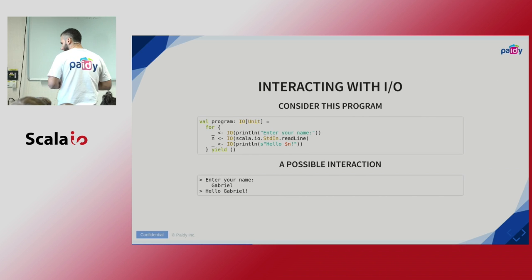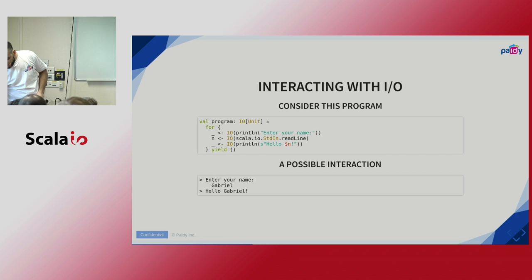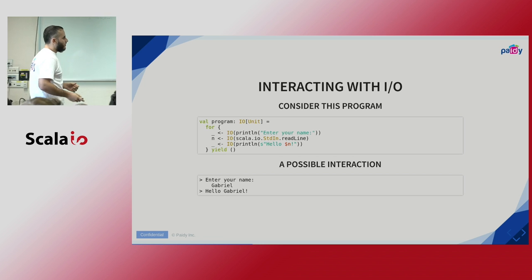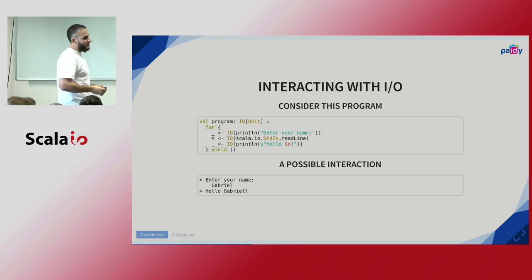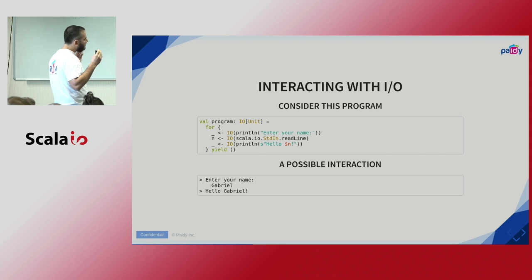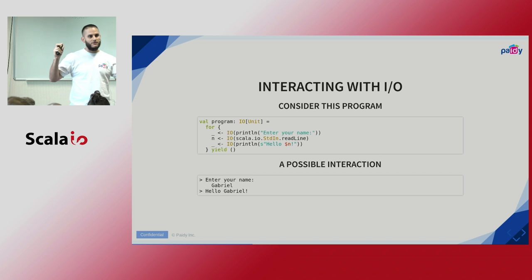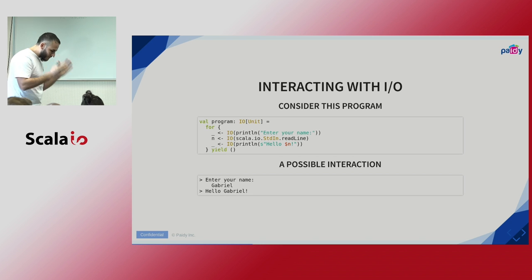Let's look at this example — a simple basic program that interacts with the console. It asks you to enter your name, reads the value from the console, and prints out 'hello' with the given input. Our program is pure and has a value of type IO of Unit. We can compose this program into larger programs and it will still be purely functional.